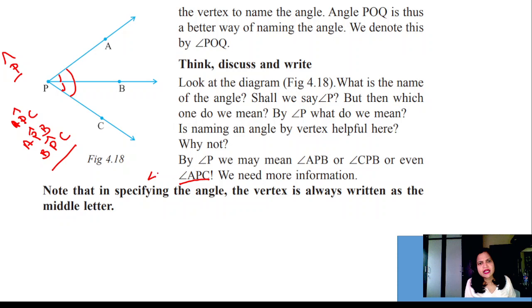You can also name the angle like APC. Note that in specifying the angle, the vertex is always written as the middle letter. In the middle, you have to write the vertex, which shows that it is an angle.